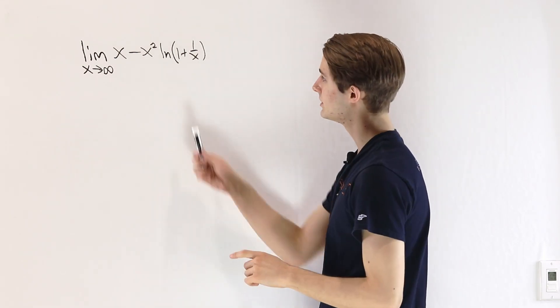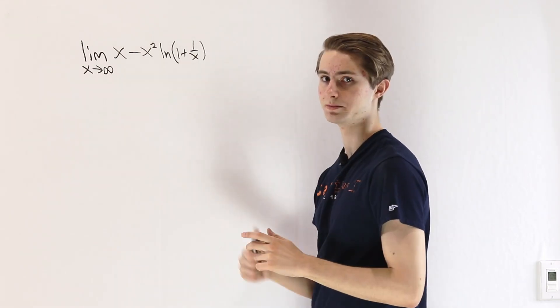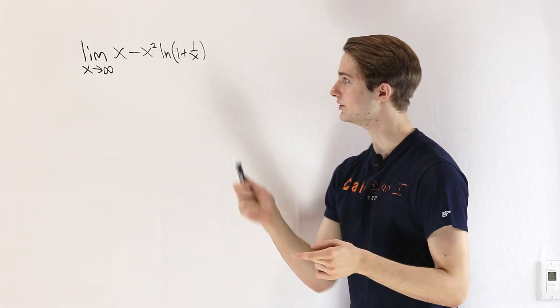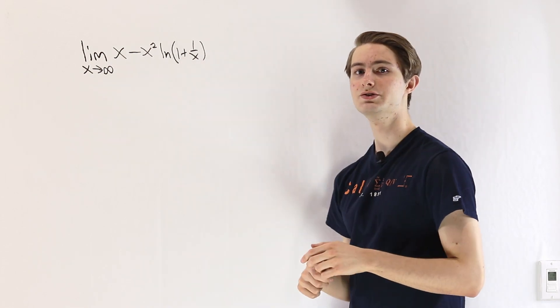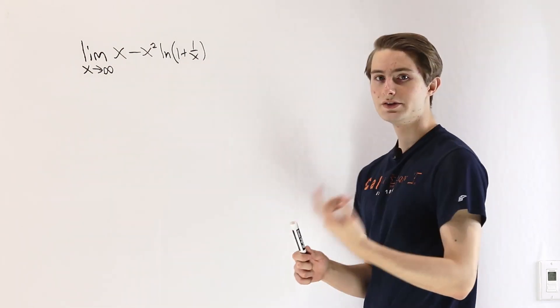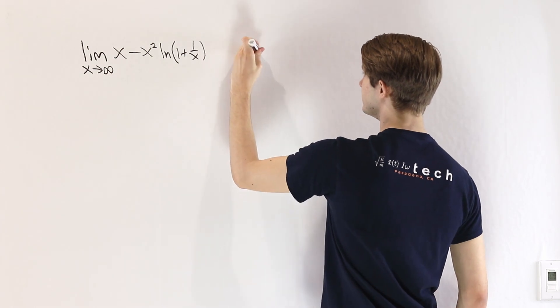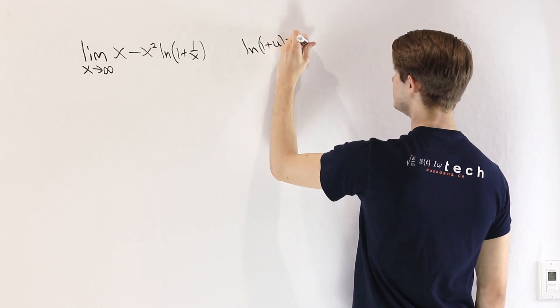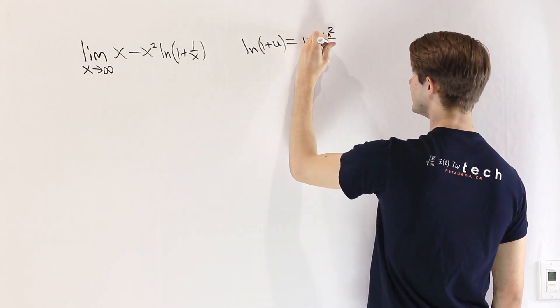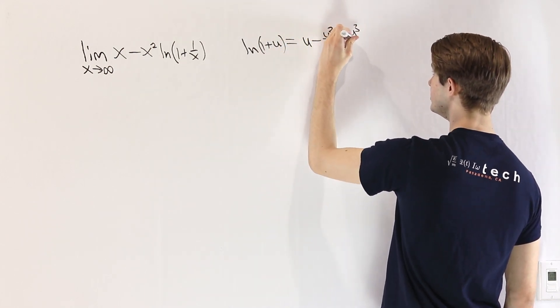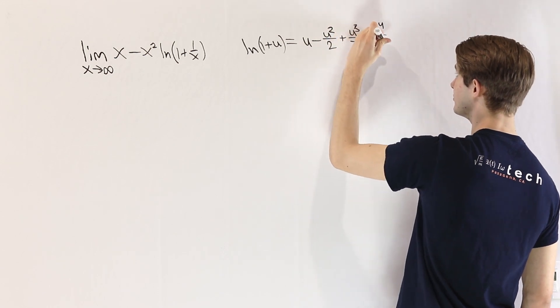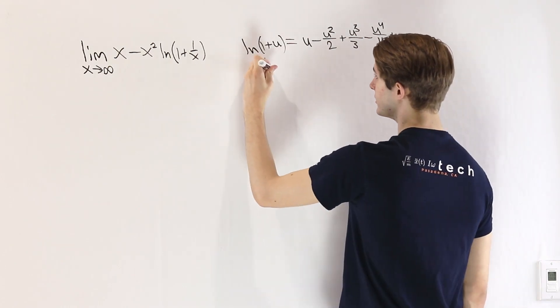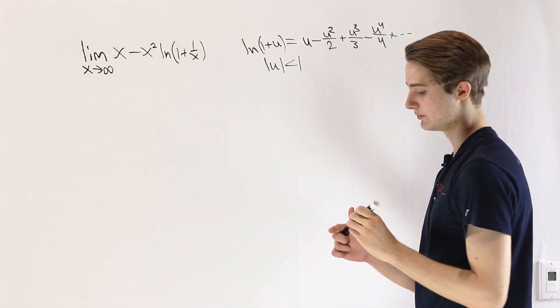One alternative is to start by looking at this natural log of 1 plus 1 over x because one method that we know to evaluate those kinds of expressions is using a Taylor series. Now, the Taylor series centered at 0 for the natural log of 1 plus some input u, that's going to equal u minus u squared over 2 plus u cubed over 3 minus u to the 4th over 4 and so on. And this is defined for the absolute value of u being less than 1.